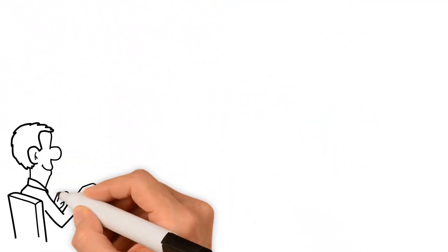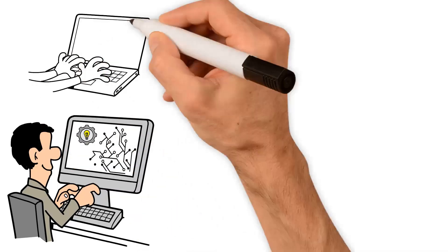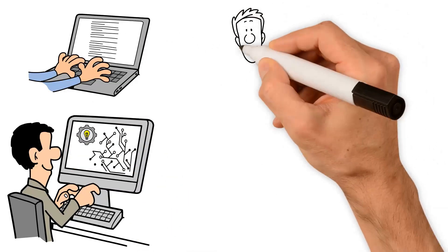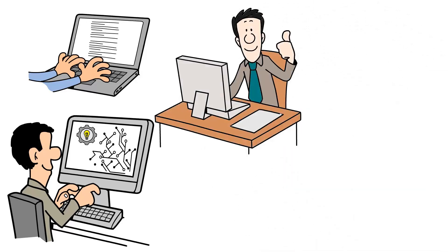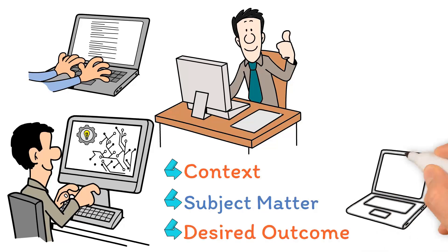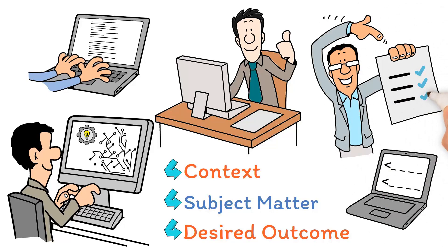Prompt engineering is a crucial aspect of utilizing and optimizing AI language models, as it involves the crafting of effective and precise prompts that elicit high-quality responses. The process requires a deep understanding of the context, subject matter, and desired outcome of the prompts. In this comprehensive list of examples, we've categorized prompts based on the following strategies.